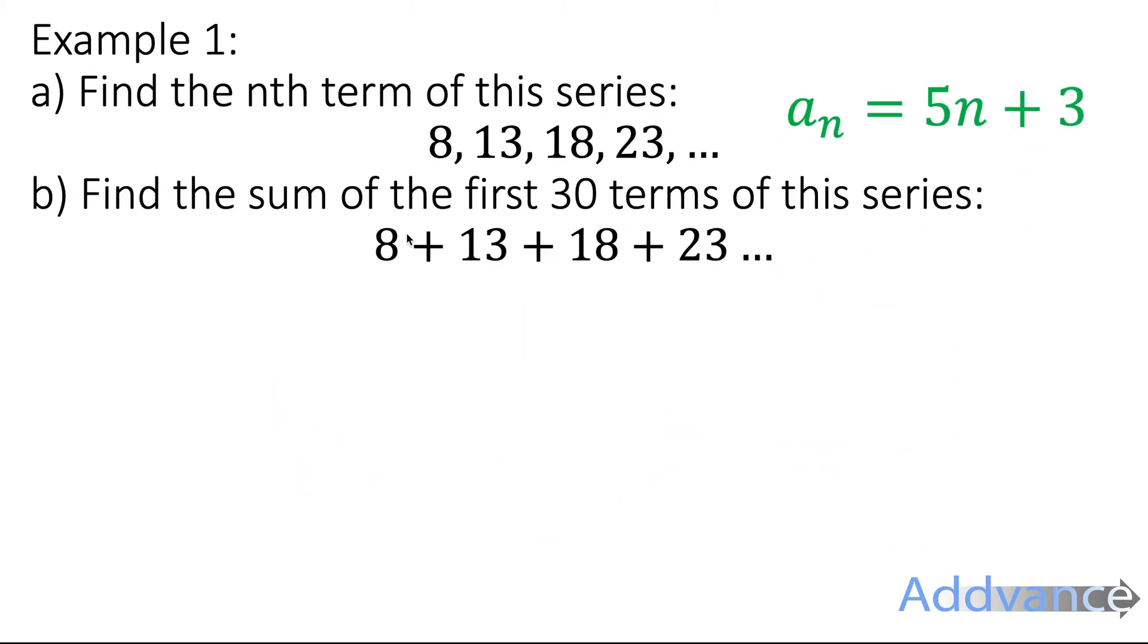Now it says find the sum of the first 30 terms of this series: 8 plus 13 plus 18 plus 23. So it's adding all the first 30 numbers of this series. So we use the formula we learnt before. And we know that A is 8. The first term is 8. The difference is 5, and the number of terms is 30.